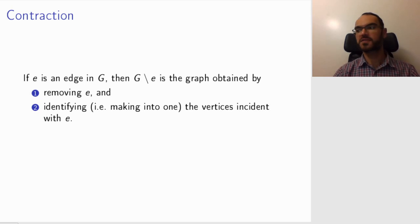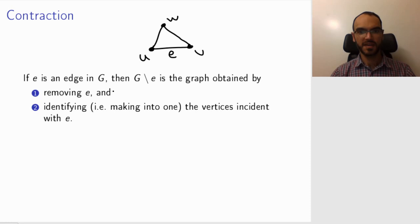Another useful construction for graphs is contraction. Contraction is a bit more tricky than removal of edges. So let's look at the same example. Remember, I had this graph with vertices U, V, W, and let's just label one edge E. So this is a graph. Now, in general, what is contraction?